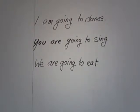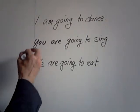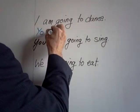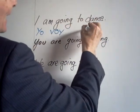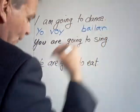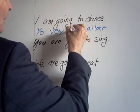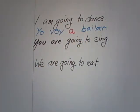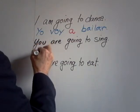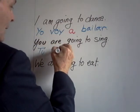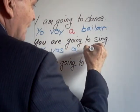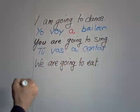Here are some things we are going to do. I am going to dance: yo voy a bailar. Notice that behind the word IR in all of its forms, we always have the little word 'a'. Yo voy a bailar — I am going to dance. You are going to sing: tú vas a cantar.